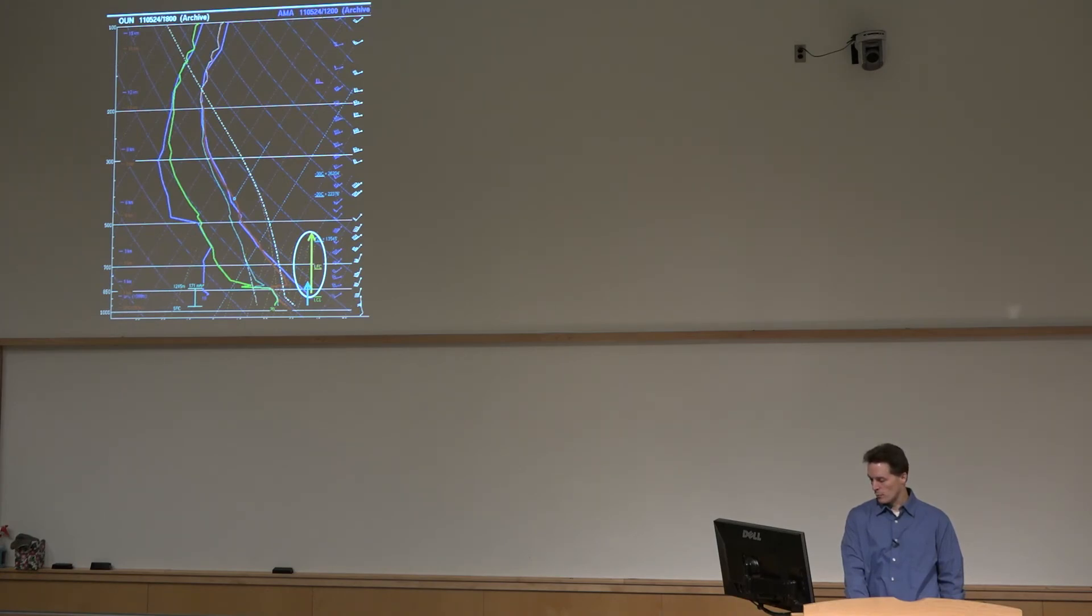So we just put the Amarillo sounding, the modified one on top, and we would suggest in this case thunderstorm initiation seems probable even though we have a fairly strong cap. We have large buoyancy but a fairly strong cap, but you can imagine on the higher terrain to the west where it's a little bit warmer, there's less convective inhibition anyway. We just don't have any sounding there. With the depth of this circulation, even with that Norman sounding, there's a reasonable chance for storm initiation.